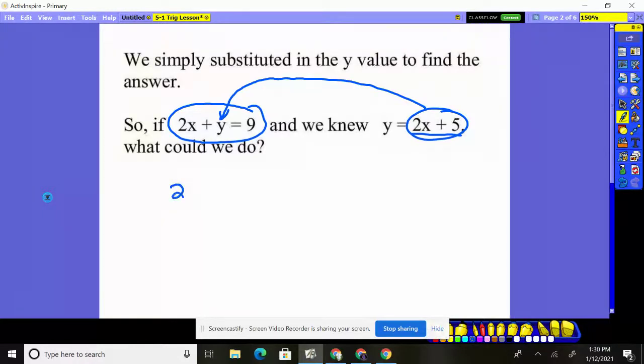So I'm going to say 2x plus, instead of y, we replaced y with what? 2x plus 5 with this, what it said y was worth. If it said y was worth 10, we would have put 10 there. But it said y was worth 2x plus 5, so that's what we put there.